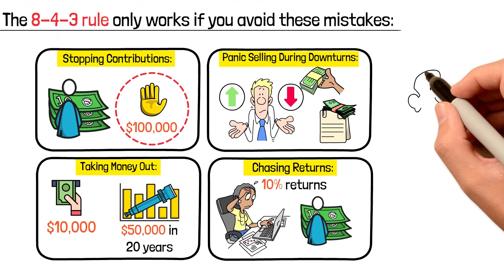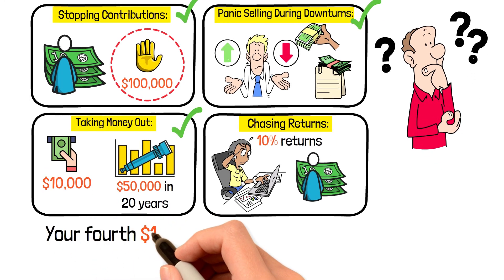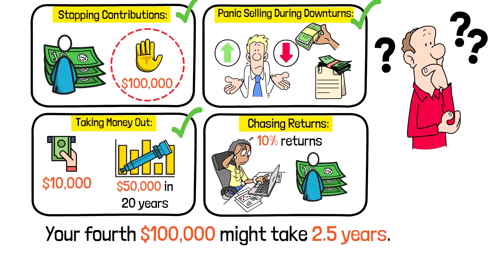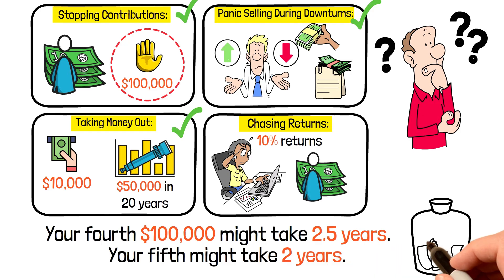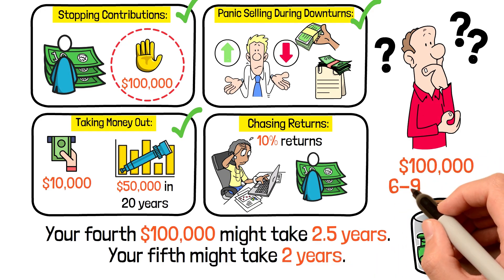What makes the 8-4-3 rule truly mind-blowing is that the acceleration doesn't stop at 3. Your fourth $100,000 might take 2.5 years. Your fifth might take 2 years. By the time you're accumulating your tenth $100,000, it might only take 6 to 9 months.